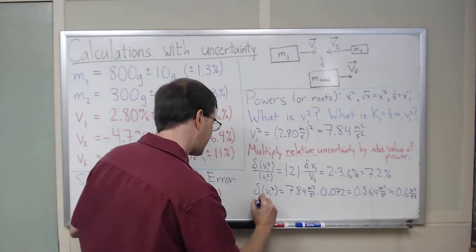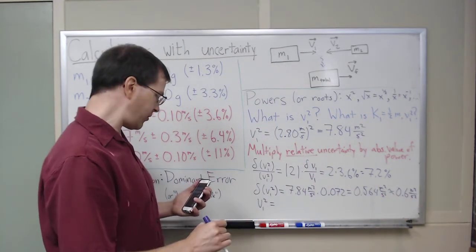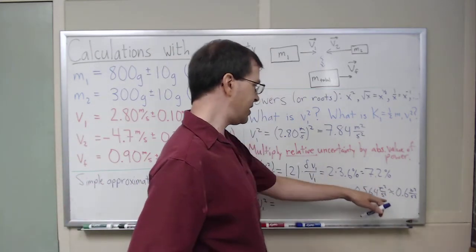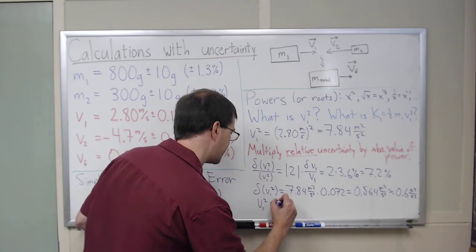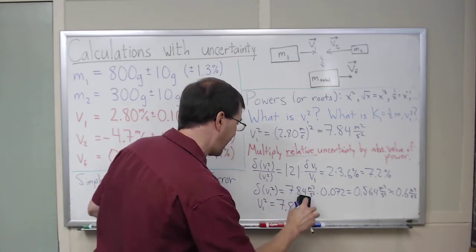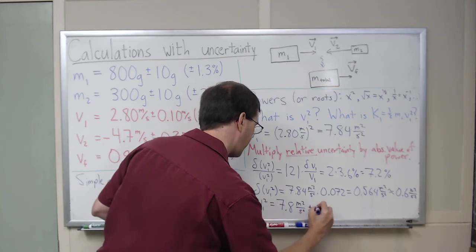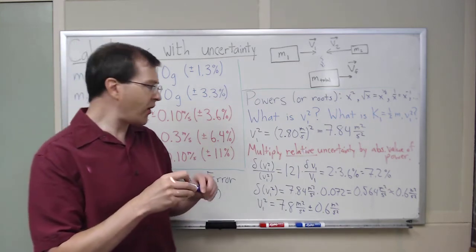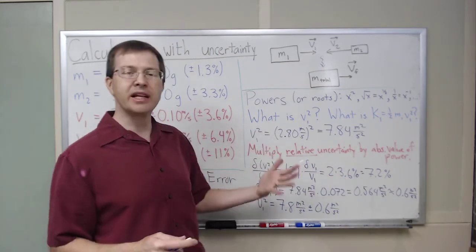So there we go. I would report this then. I would say that V1 squared is equal to, well, this is only one decimal place. I've rounded off to one sig fig, because the first sig fig is not a one or a two in this. I've rounded to one sig fig there. And so I'm going to do plus or minus 0.6. I only keep one decimal place. I would say this is, oh sorry, 7.8. I round off to match the uncertainty. 7.8 meters squared per second squared, plus or minus 0.6 meters squared per second squared. You can see that squaring a quantity really makes the uncertainty much worse, right? That squaring really does a big deal.